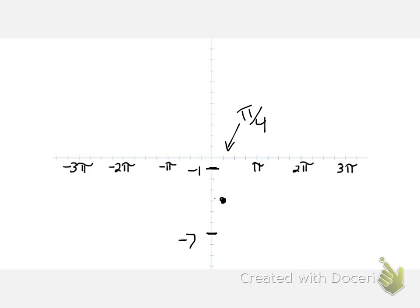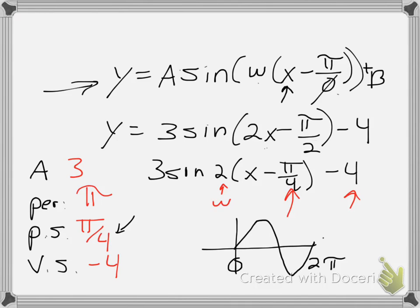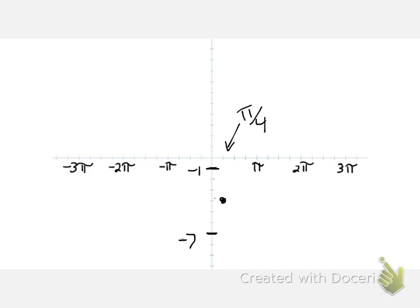Now again, normally we would go to 2π, but since we have our new defined period of π, I'm only going to go that far to the right. So we could do it mathematically. We could say, if π/4 is where I started, if I go π to the right, I'm adding π to this.